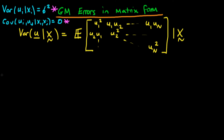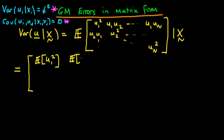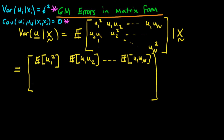If we continue to work with this, we know that the expectation of a matrix is just the same thing as the matrix of the individual expectations. So this is just equal to the matrix where the first component is the expectation of u1 squared, the second component in the first row is the expectation of u1 times u2, and the last component in the row is the expectation of u1 times un — where implicitly we should be writing given x in each of these individual expressions.